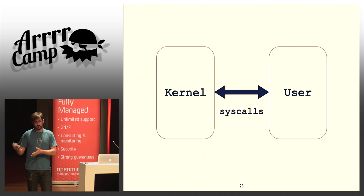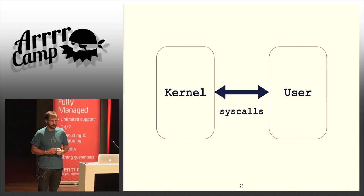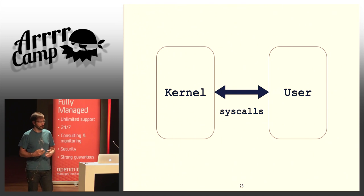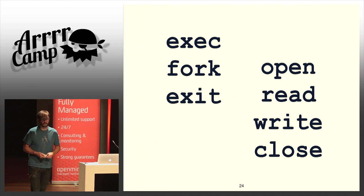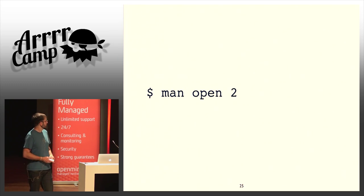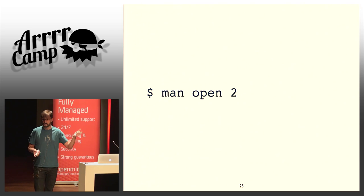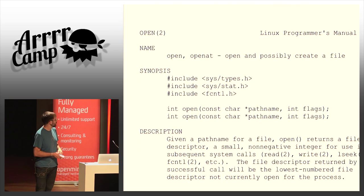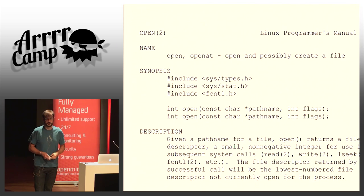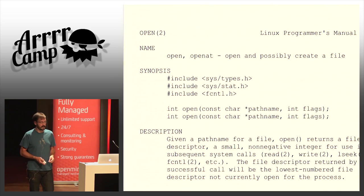A syscall is when, in user land, we make a call to the operating system and ask it to do something on our behalf through a very well-defined interface. There are a lot of things that are syscalls: process management functionality, file reading and writing, network writing — all of those are mediated by syscalls at the kernel level. You can find documentation on each syscall you see in strace output using the man command, section 2 — for example, "man open 2" shows the open command, C headers, and a bunch of information.